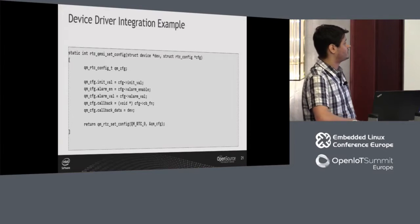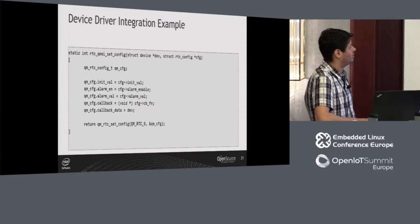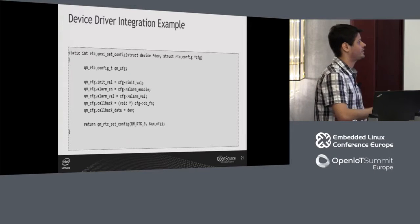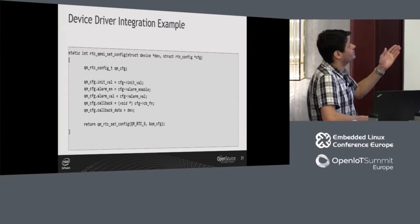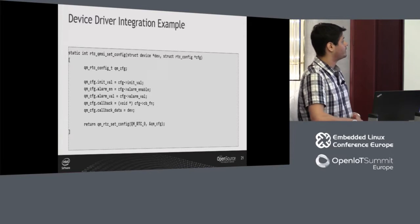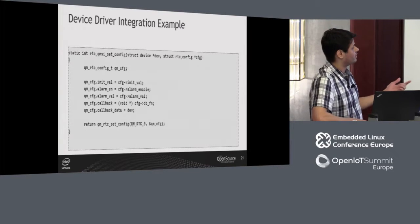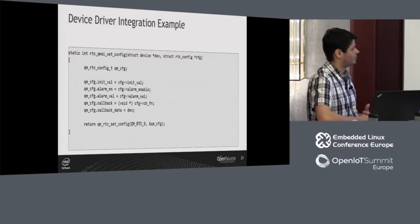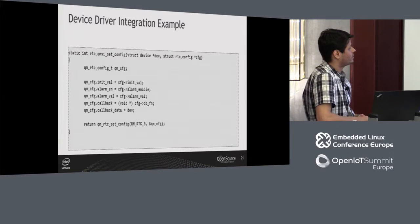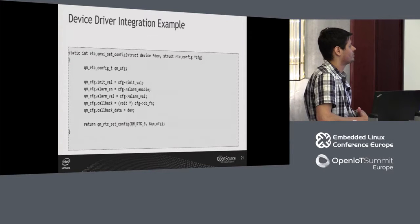This piece of code illustrates what I was saying — it's a simplified version of what we actually have in the code base. We have the RTC QMSI set config function, which implements the RTC API from Zephyr. What it really does is call the QMSI function to actually configure the RTC controller — it copies those parameters to the QMSI configuration struct and simply calls the set config API.